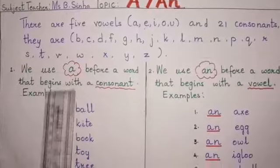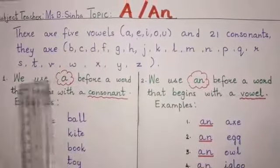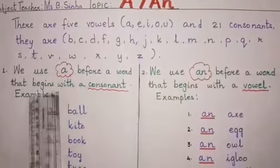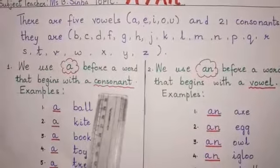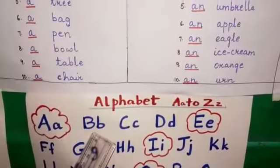But children, we have to know when to use A. We use A before a word that begins with a consonant. For example, a ball. The first letter is B. You can see here B is a consonant.